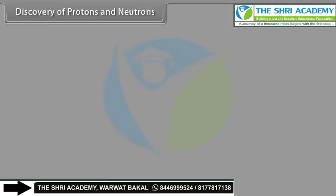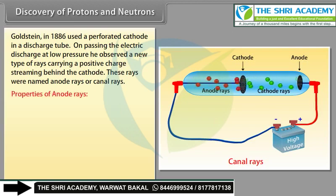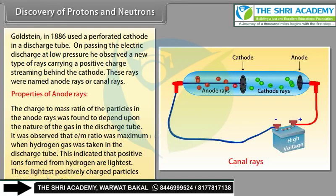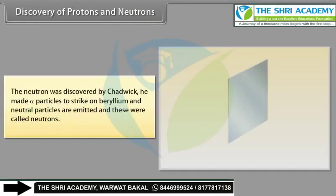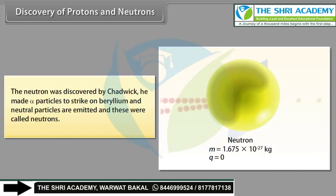Discovery of protons and neutrons: Goldstein in 1886 used a perforated cathode in a discharge tube and observed rays carrying positive charge streaming behind the cathode, named anode rays or canal rays. The e/m ratio of these particles depended on the gas used, and was maximum for hydrogen, indicating the lightest positive particles — named protons. Neutrons were discovered by Chadwick, who made alpha particles strike beryllium, emitting neutral particles called neutrons.